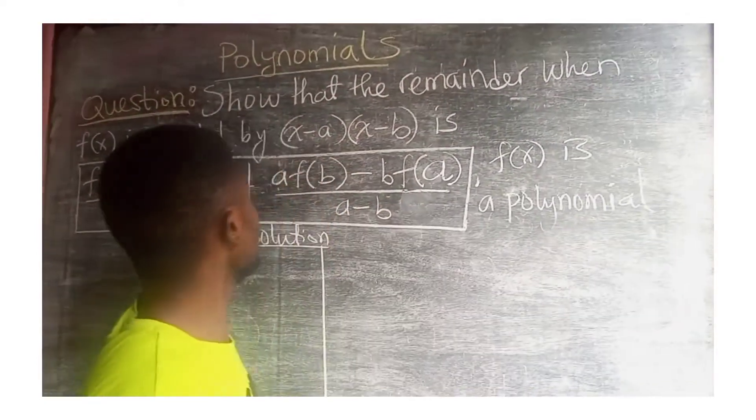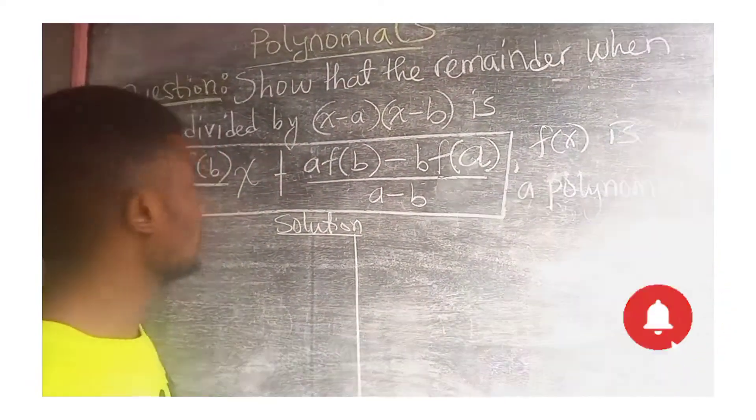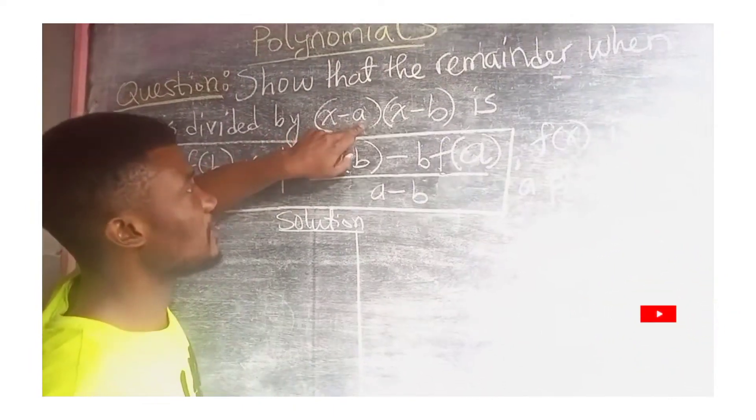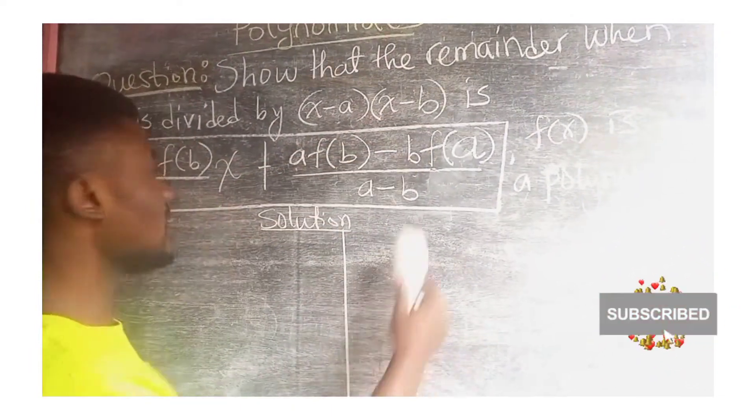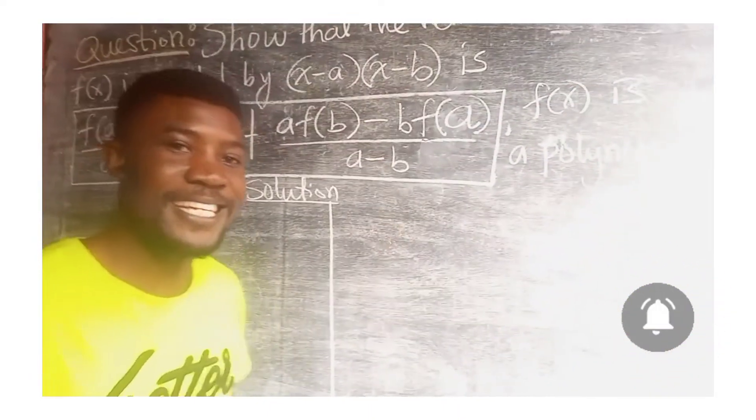Look at this question. The question says, show that the remainder when f(x) is divided by (x-a)(x-b) is all of this, where f(x) is a polynomial in x.